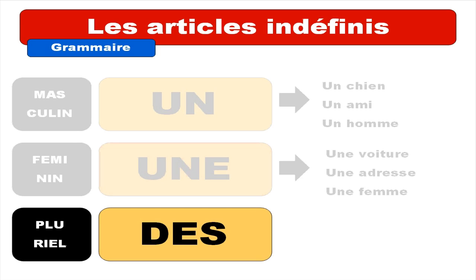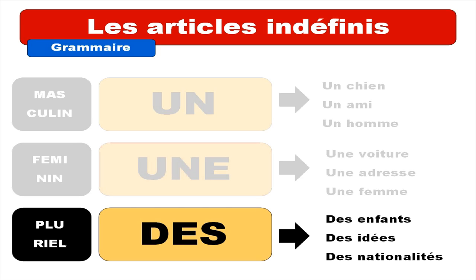For the plural form it's 'des'. You will have to make this liaison as well — the small link between the words. For example: 'des enfants'. Note that the final T and final S are not pronounced.